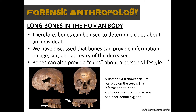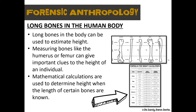Long bones in the body include the humerus, the radius, the ulna, the femur, and the tibia. Here you have a chart where you can see what those different bones look like. They can be used to estimate height. Now this is an estimate — it is not exact. Sometimes it's accurate and sometimes it is not, but again in forensics it provides another clue that could help investigators.